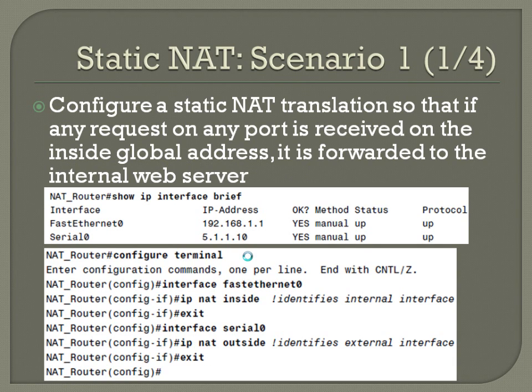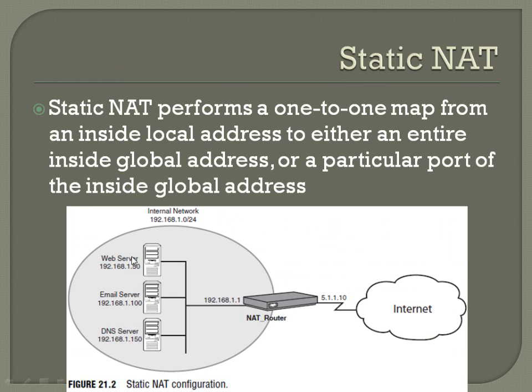In this example, configure a static NAT translation so that if any request on any port is received on the inside global address, it is forwarded to the internal web server. We want any request to any port number that shows up on this public address to go to your internal web server.